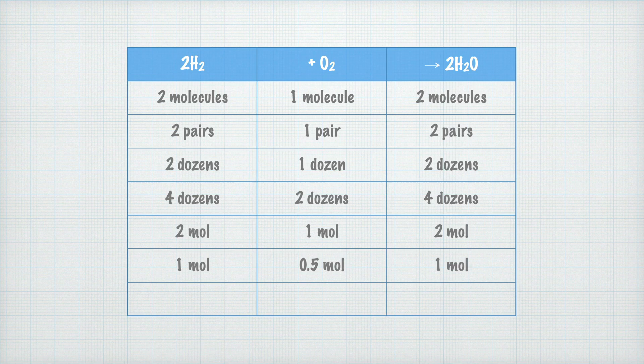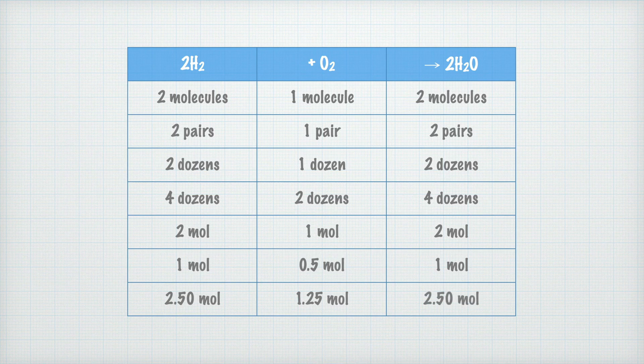For the last calculation in this table: if we have 2.50 moles of hydrogen, how much oxygen is required? We need half of that, which is 1.25 moles of oxygen, and then 2.50 moles of water form.